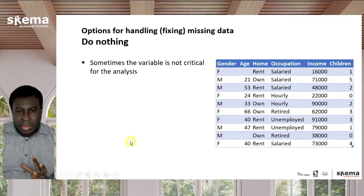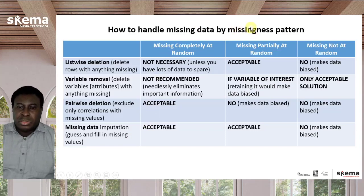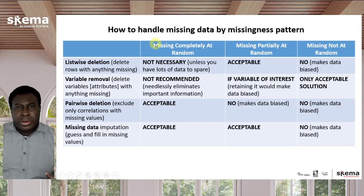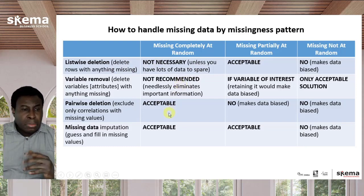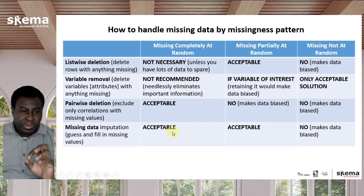So those are the patterns of missing data and the ways to handle them. Bringing these together: if you have data that's missing completely at random — absolutely no pattern to what is missing — you don't need to delete rows with missing values, and it's not recommended to delete columns. Pairwise deletion or imputing the missing values are both acceptable options.